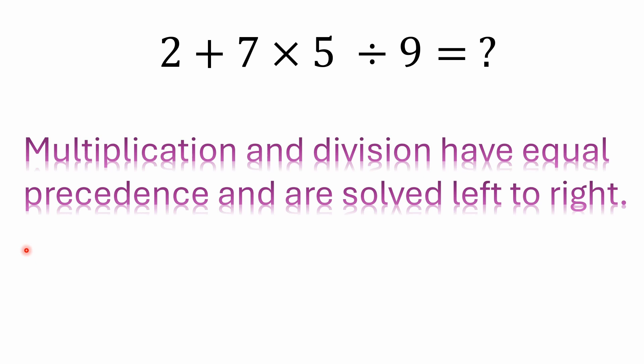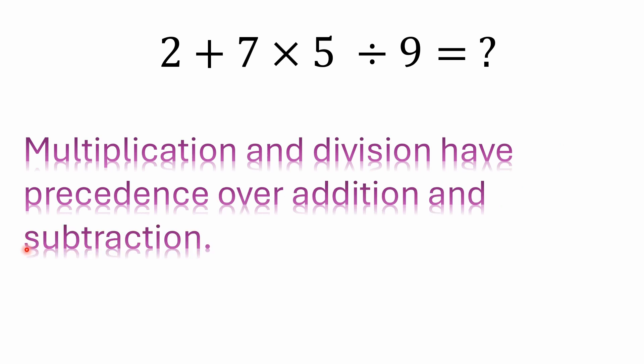And that's really not interpreted that way. If you type it into your cell phone calculator or scientific calculator you're going to end up with a different answer because the way it's interpreted now is that your multiplication and division have equal precedence again and they're solved left to right.